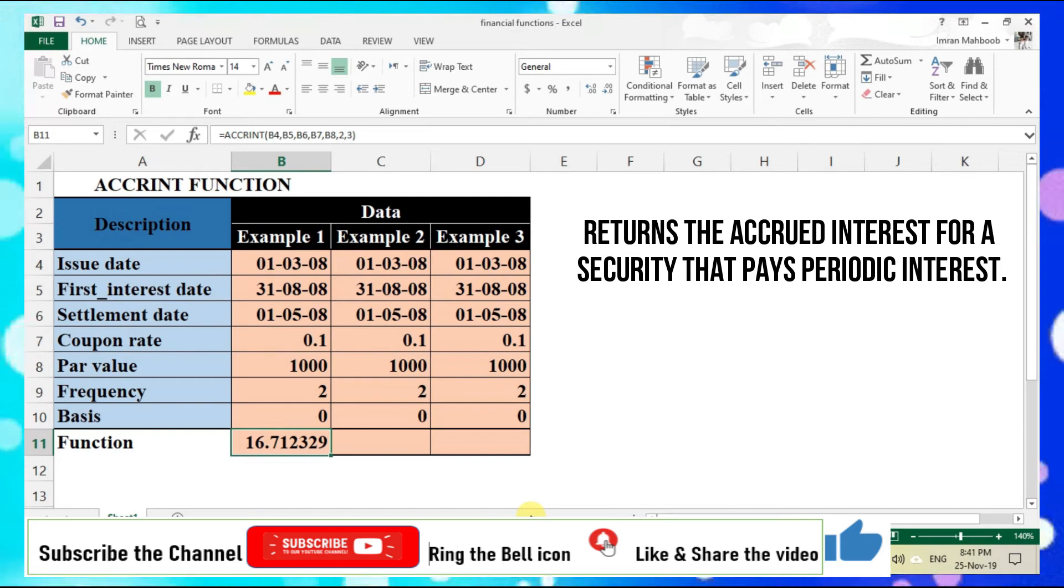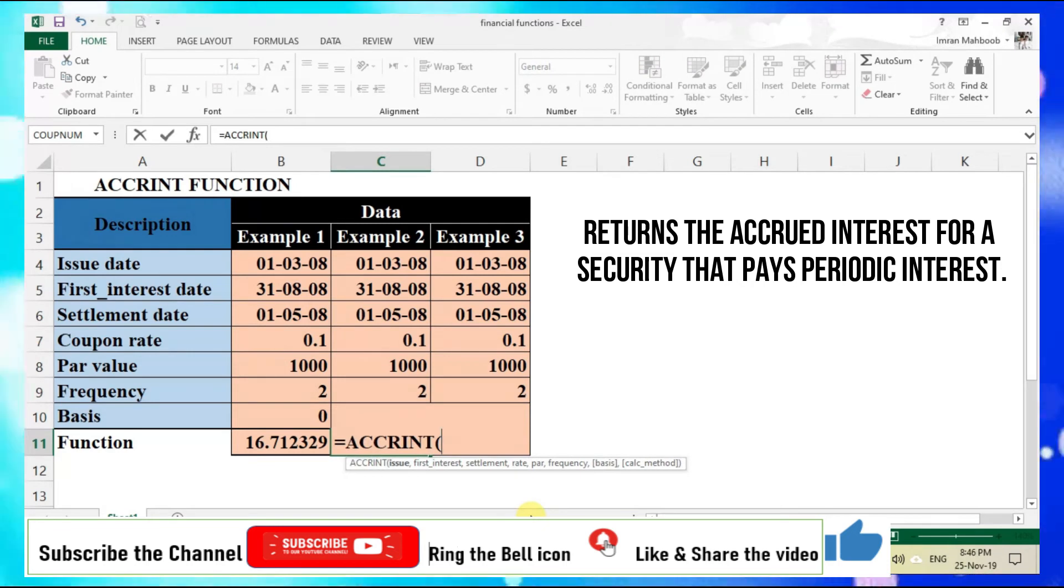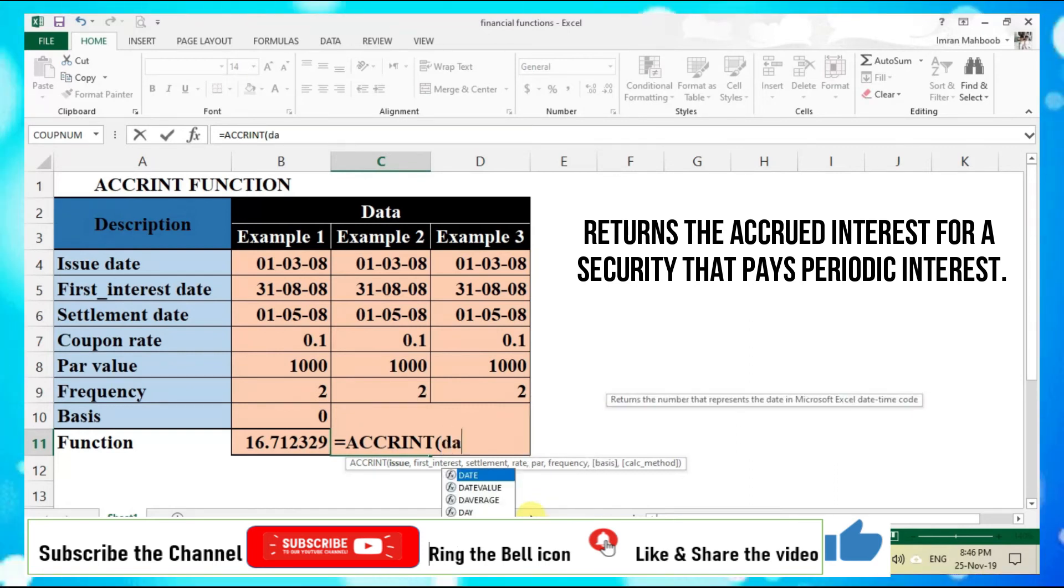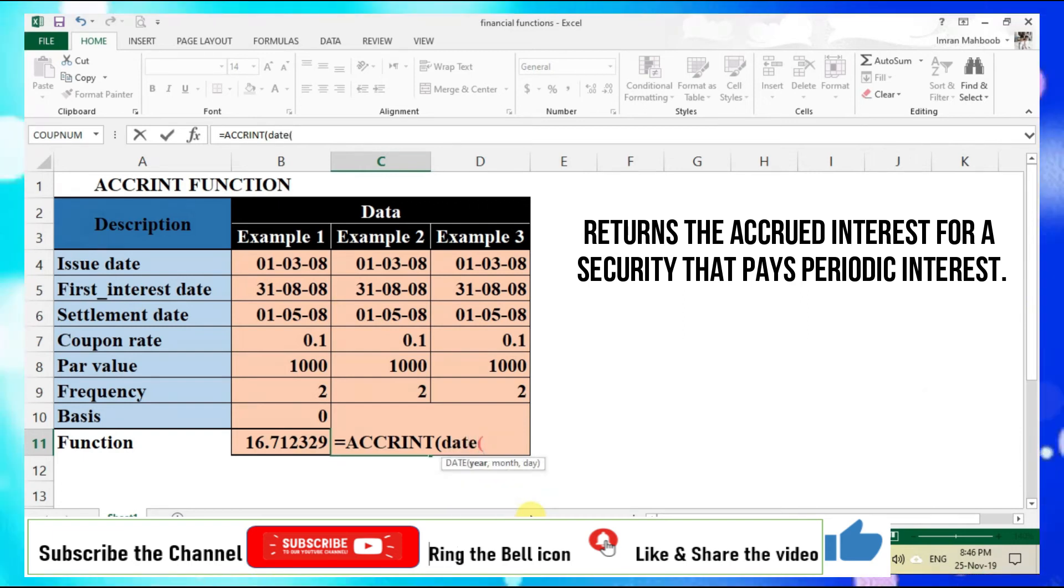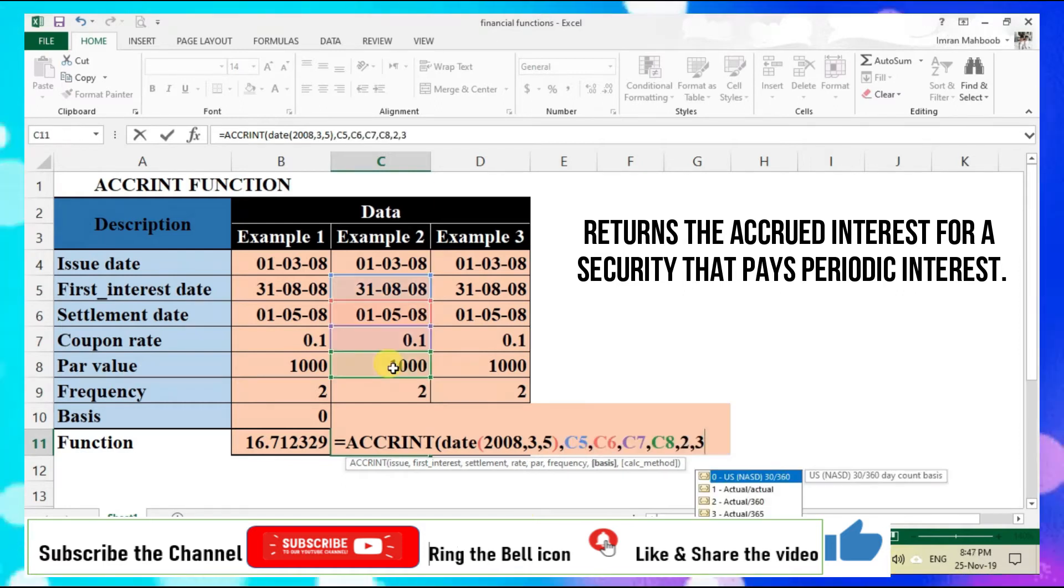Close parenthesis, enter, and we find out the accrued interest rate for a security with periodic interest. Now in example two, equals ACCRINT, open parenthesis. Now here if we want to give any other issue date, we can directly enter into this formula by using DATE function. DATE, open parenthesis, year comma, month comma, date, close parenthesis.